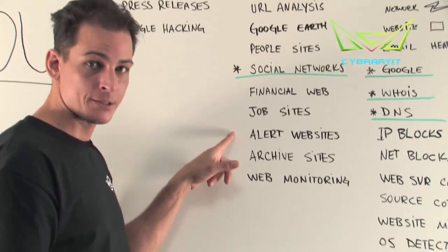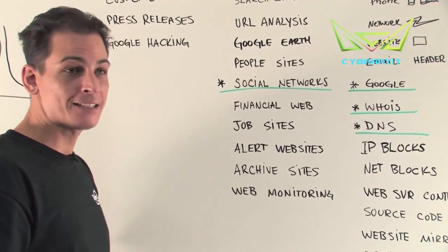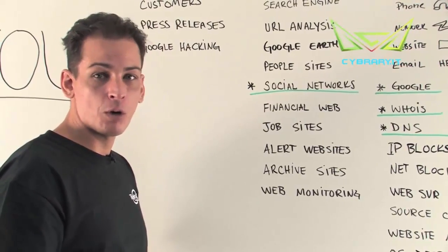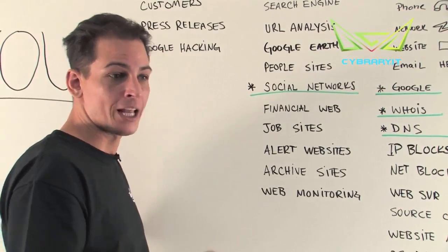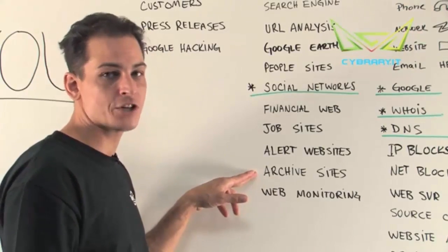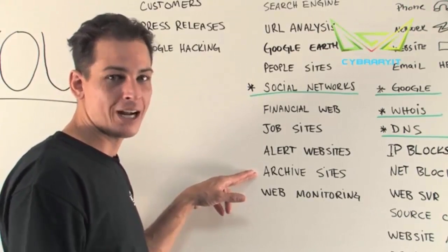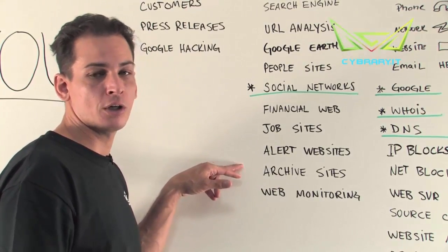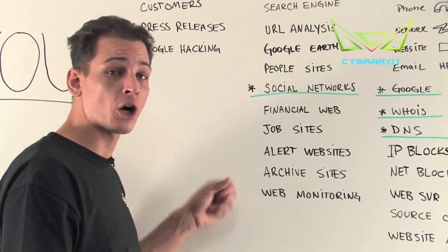Also, alerting websites. It's one thing for us to go find information about our target, but it's another thing to set up an alert at something like Google Alerts or Giga Alert — which is a paid service — and have that information emailed to us, so we don't have to constantly go out and search for it. In some cases, I just set up alerts and have the information find me. Also, archived websites — there are places on the internet where you can find cached content or use something like archive.org, where there's a copy of historical content.